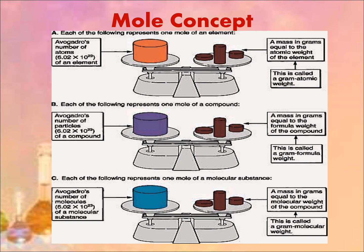So that means that one mole of an element, one mole of a compound, or one mole of a molecular substance are all equal to 6.02 × 10²³. When it is an element, we use the unit 'atom.' When it is a compound, we use the unit 'particles.' When it is a molecular substance, we use the unit 'molecules.'